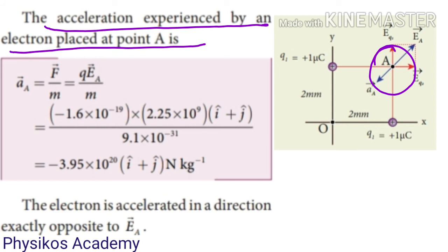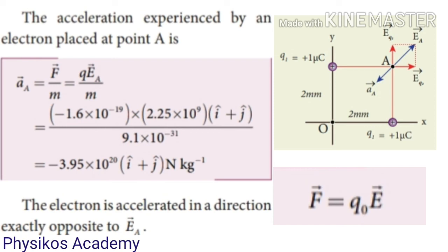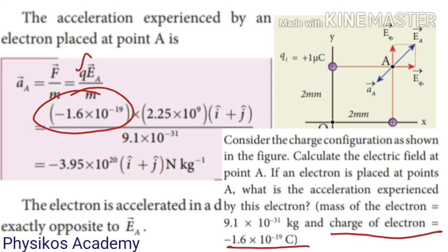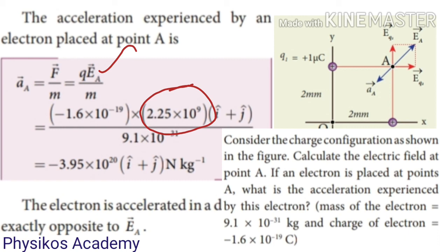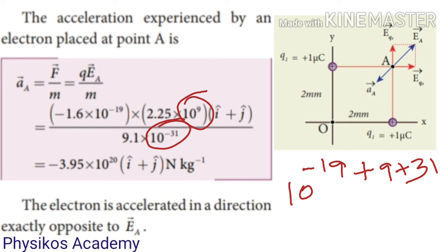For the second case: if an electron is placed at point A, what is the acceleration experienced by the electron? Using Newton's second law, F = ma, so acceleration A = F/m. The electric force is F = Q₀ × E. Substituting the charge of the electron and the electric field at point A, with the mass of the electron in the denominator as 10⁻³¹ kg, giving 10⁺³¹. So 31 + 9 = 40, and 40 minus 19 gives 10²¹.